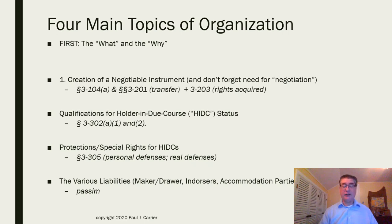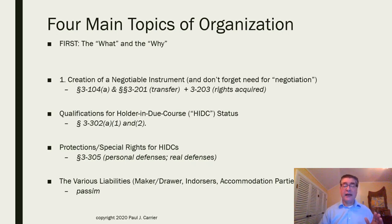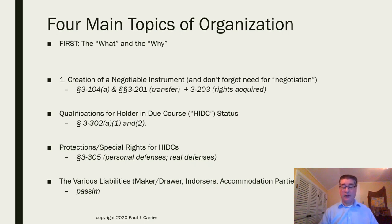You might have an accommodation party — someone who also signs on the back but doesn't receive any value. A parent might co-sign on the back of a check or promissory note. He or she doesn't get the car or refrigerator, but stands to pay, particularly if you cannot. The law prefers accommodation parties even though they can be sued straight up. Courts try to force endorsers who actually get consideration to be liable first, so accommodation parties don't have to pay. But be careful — it's a form of secondary liability.